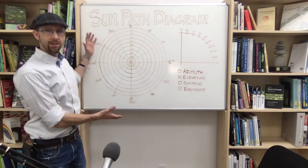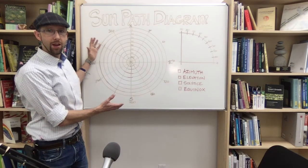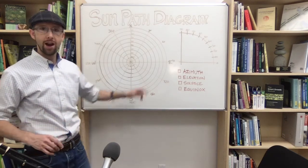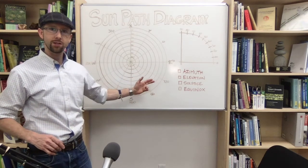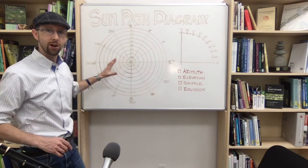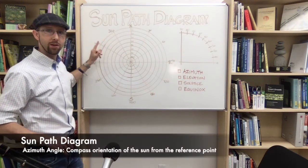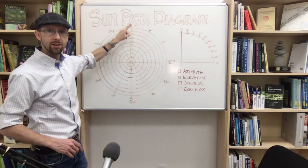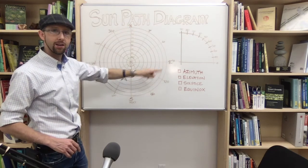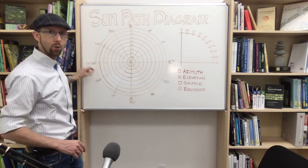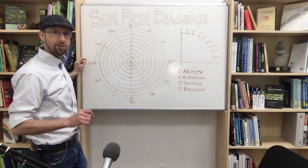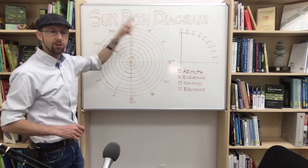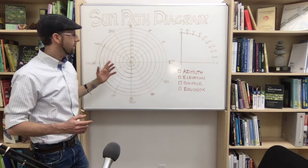This is the basic template for a sun path diagram. There are a few terms you'll need to know: azimuth, elevation, solstice, and equinox. On the sun path diagram, the azimuth is the compass direction — north is zero, east is 90, south is 180, and west is 270 degrees. The azimuth angle tells you which direction you're pointed.